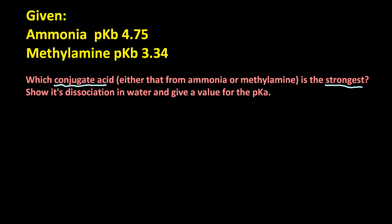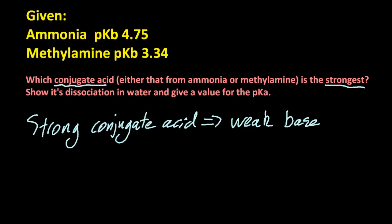If I'm looking for the strongest conjugate acid, I need the weakest base. So if I write out the Kb values, the smallest Kb is going to be my weakest base. So that's ammonia.